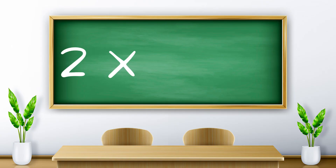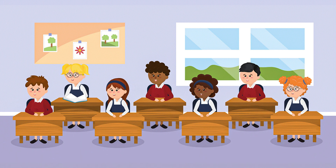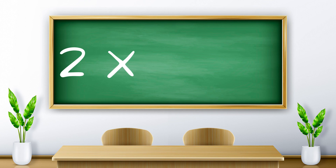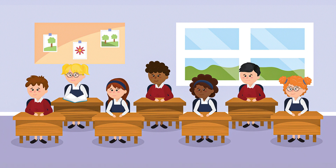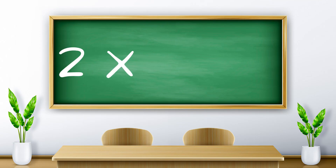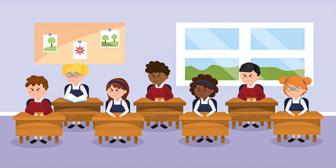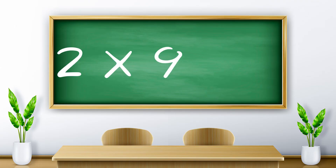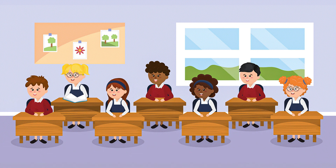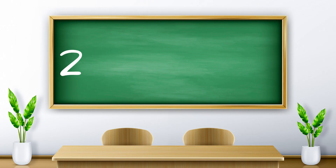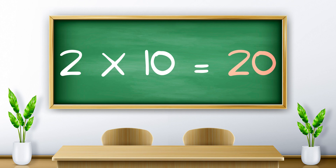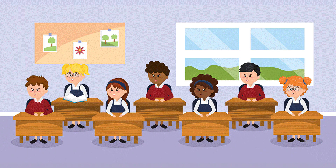Two sixes are twelve. Two sevens are fourteen. Two eights are sixteen. Two nines are eighteen. Two tens are twenty.